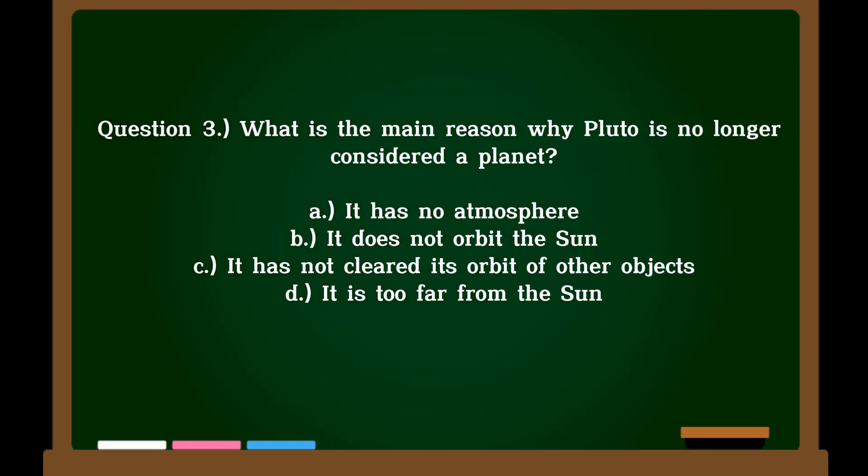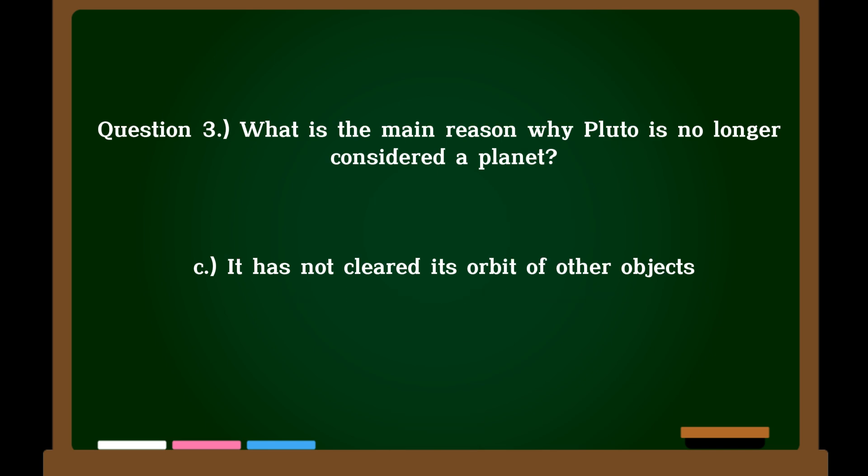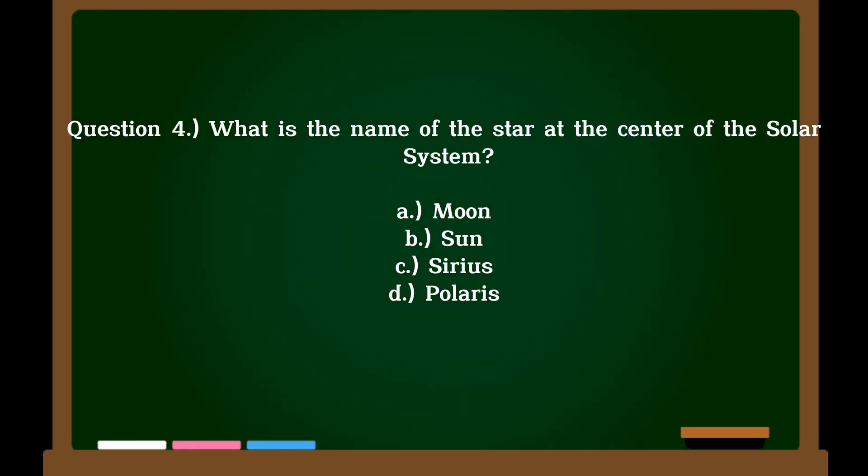Question 3. What is the main reason why Pluto is no longer considered a planet? A. It has no atmosphere. B. It does not orbit the sun. C. It has not cleared its orbit of other objects. D. It is too far from the sun. Correct answer: C. It has not cleared its orbit of other objects.